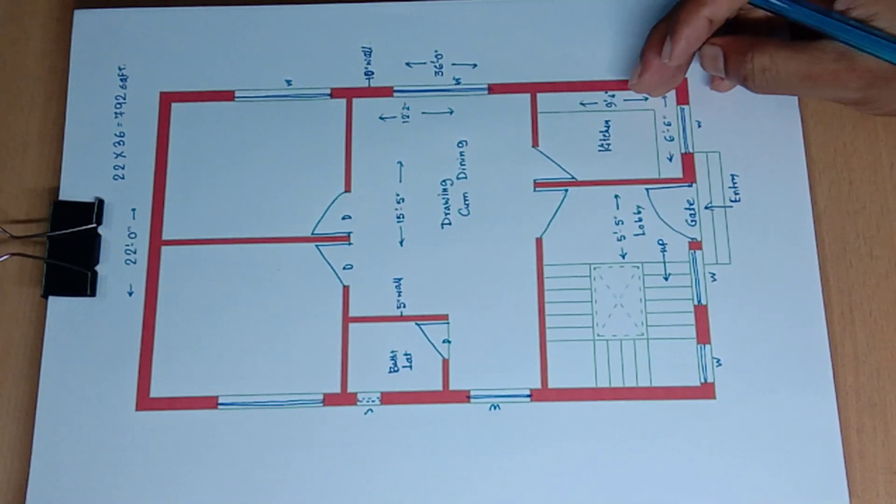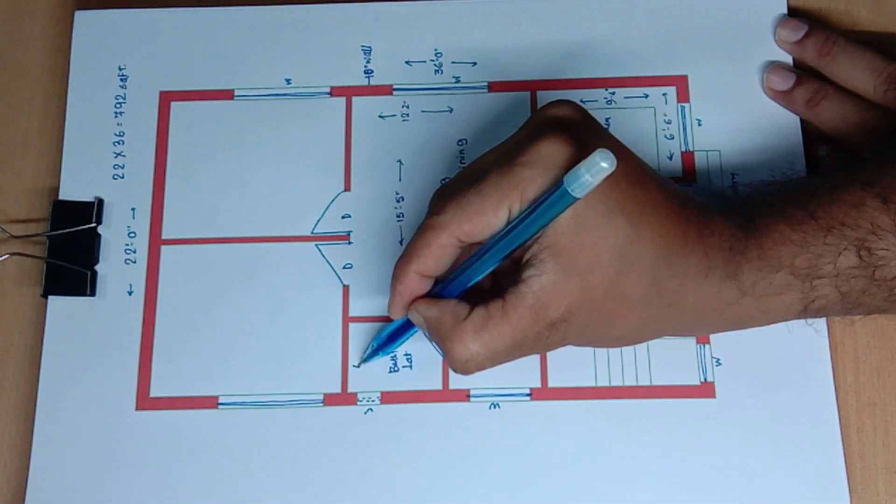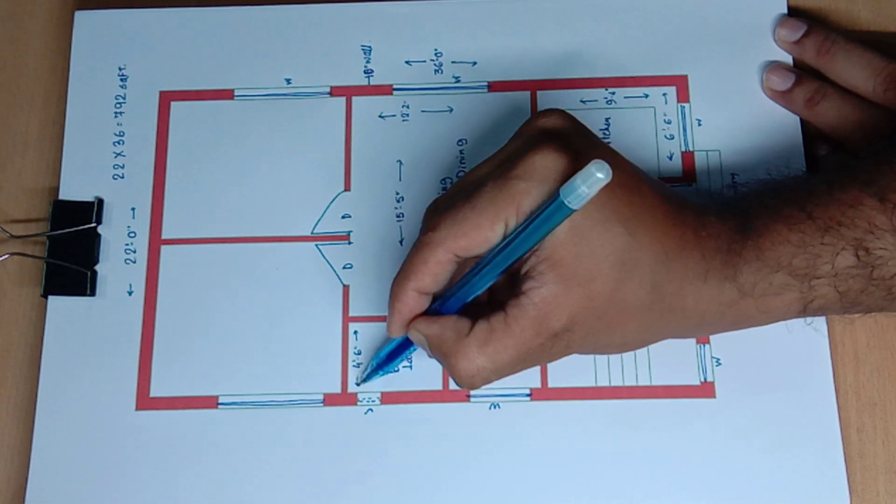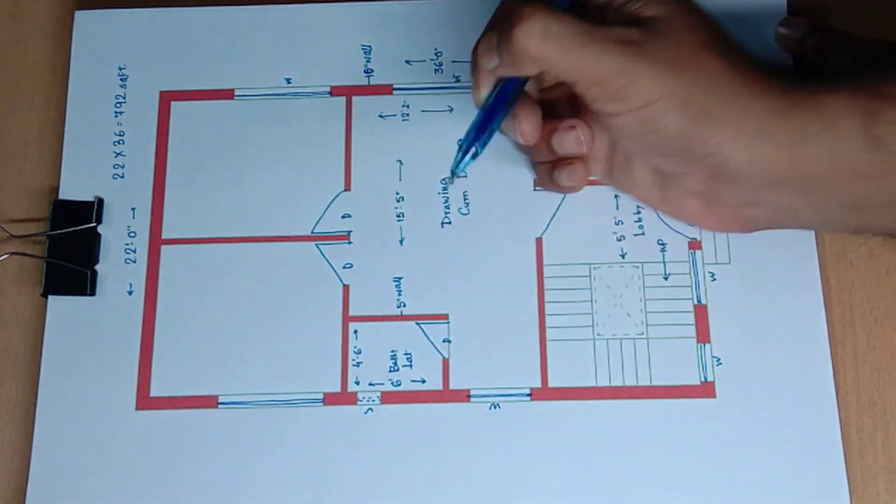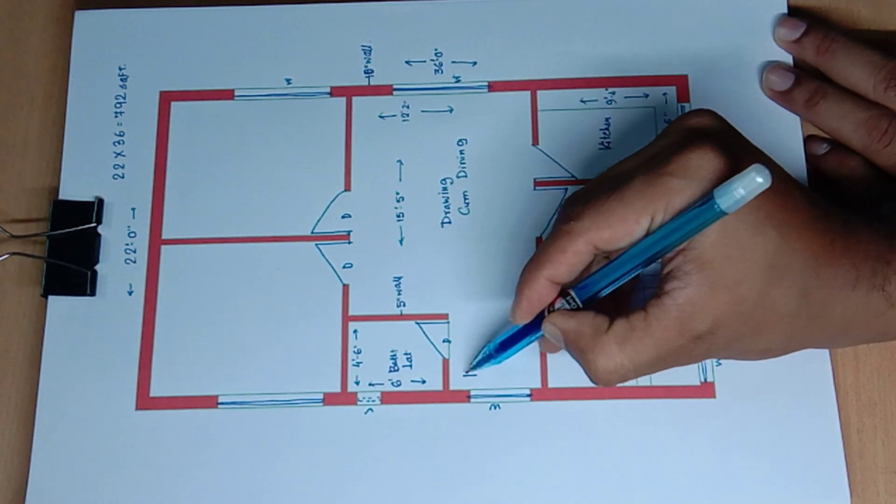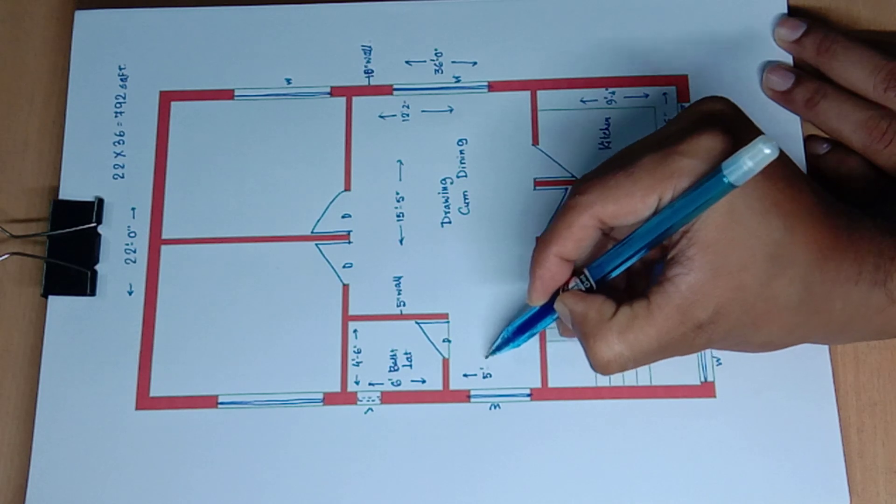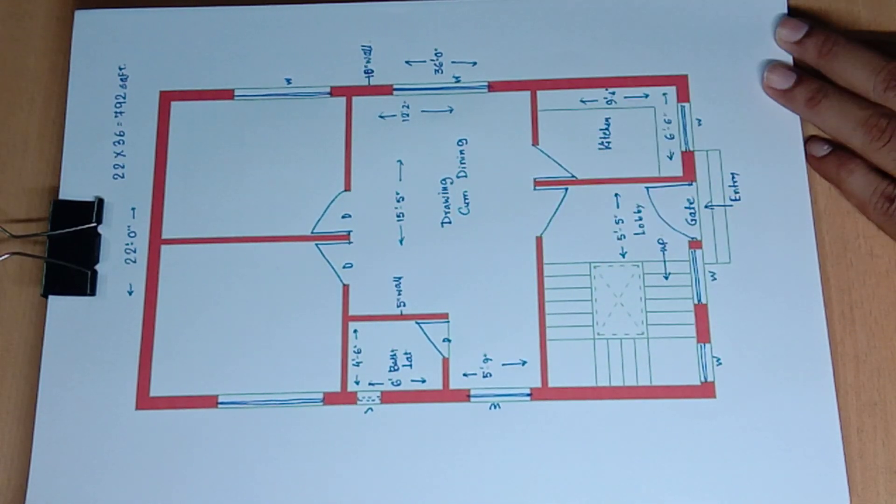Bath plus latrine. 4 feet 6 inch and 6 feet. And 6 feet and 5 feet 9 inch wide.